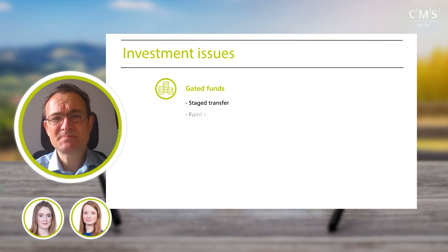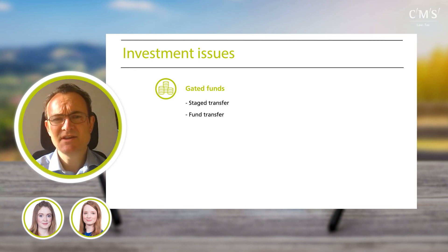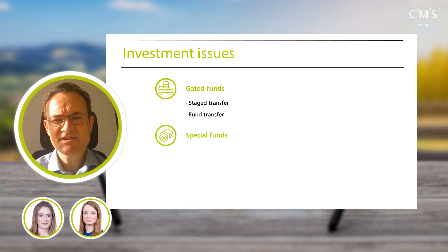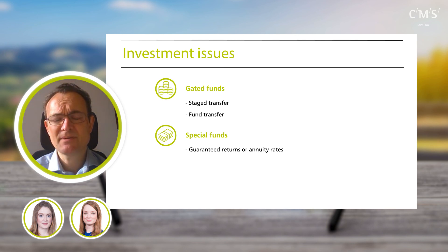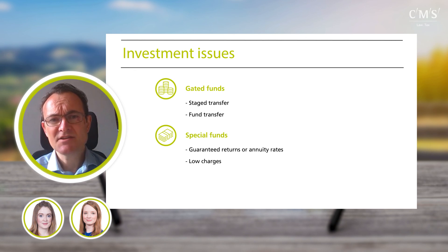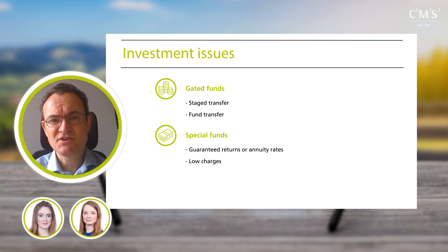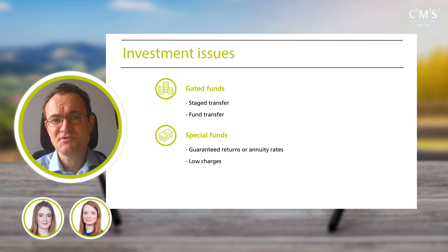Alternatively, in some cases you may be able to persuade the master trust provider to accept a transfer of the investment fund itself in its gated status, with the master trust provider selling those assets and transferring them into its own funds only when the gating is lifted. The second investment issue involves special funds in the existing scheme — funds with guaranteed investment returns or guaranteed annuity rates that could be valuable to members, or funds with historically very low charges that the master trust cannot match. The employer may agree to compensate members for the loss of those guarantees or meet the difference in charges, or the provider may be able to do a deal on charges.